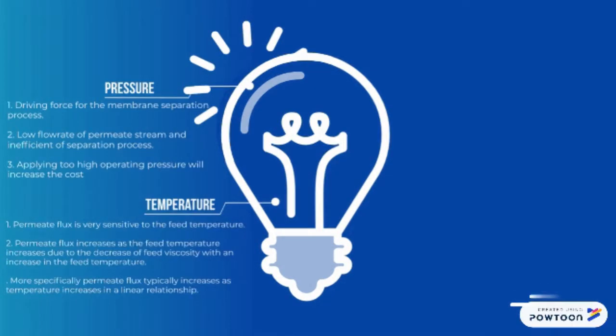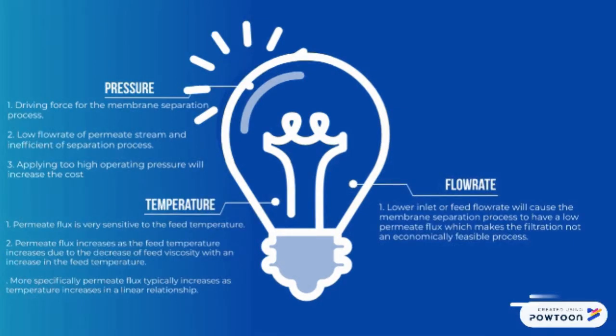Temperature can also be a factor. Permeate flux is very sensitive to feed temperature and increases as the feed temperature increases. This is mainly due to the decrease of feed viscosity with an increase in feed temperature. More specifically, permeate flux typically increases with temperature in a linear relationship. Lower inlet or feed flow rate will cause the membrane separation process to have a low permeate flux, making the filtration not an economically feasible process.